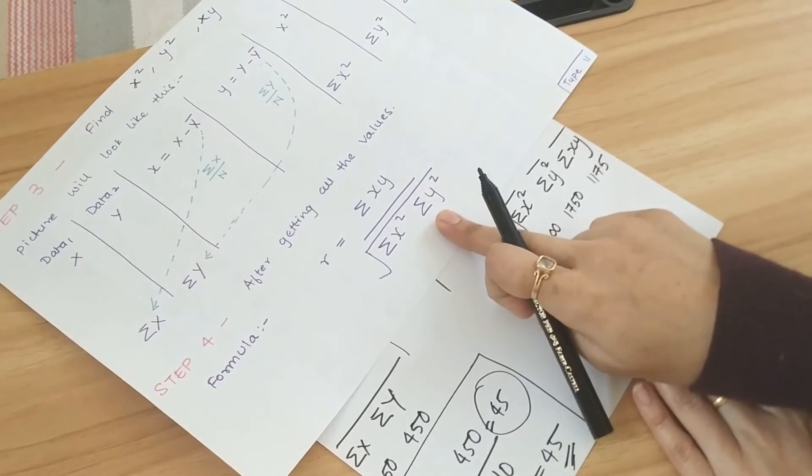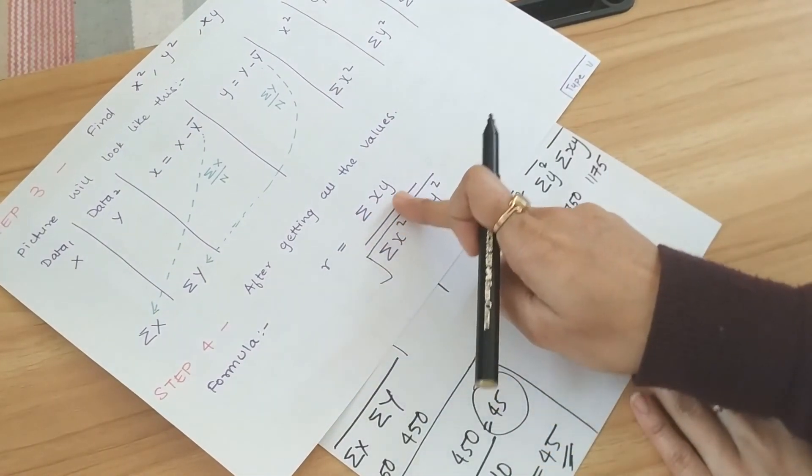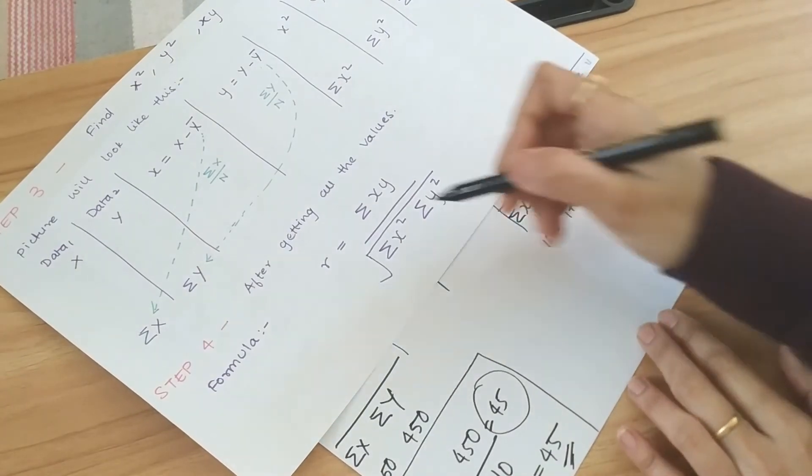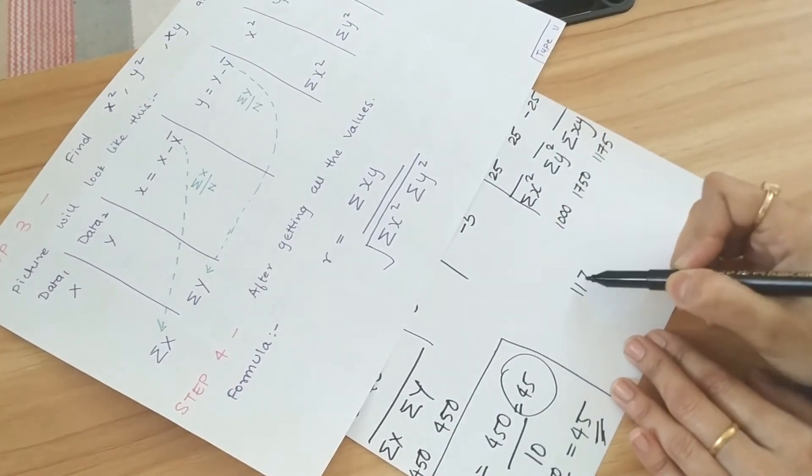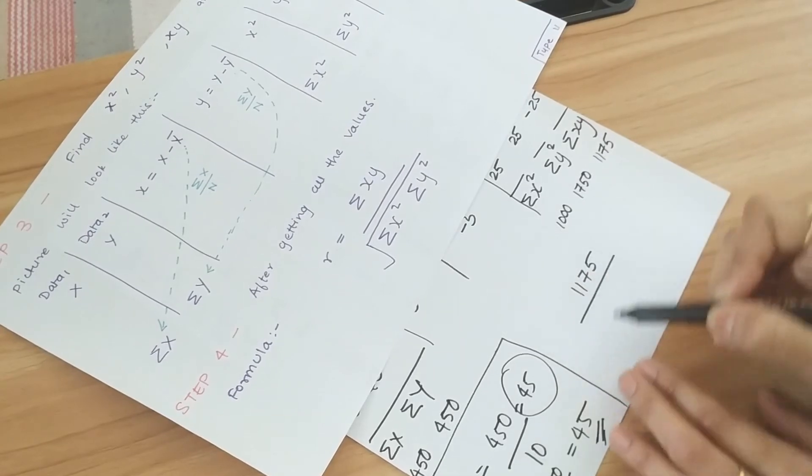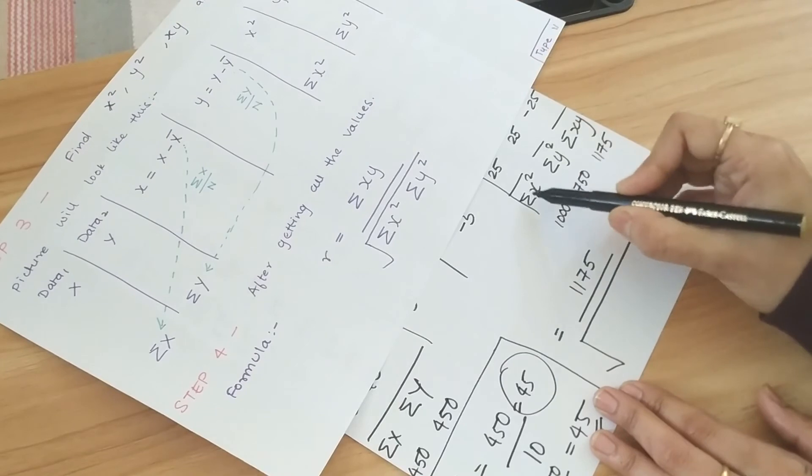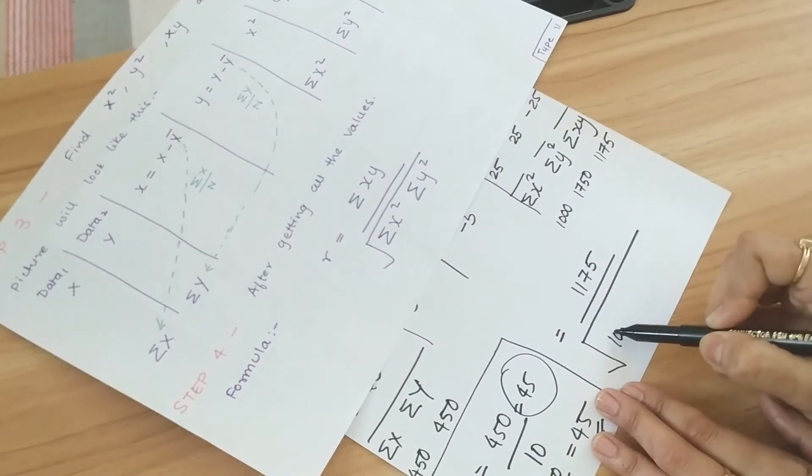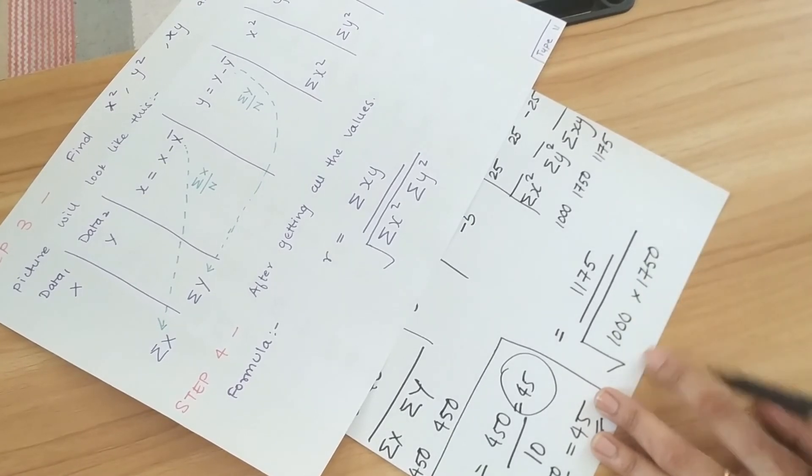Now just directly apply the formula. The r that is the Pearson's coefficient is this formula. So summation of xy is 1175 divided by square root of the summation of x square that is 1000 into this one.